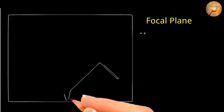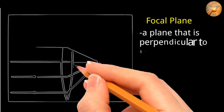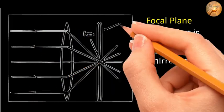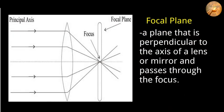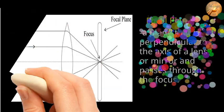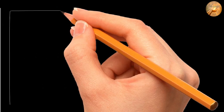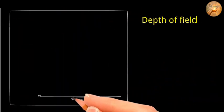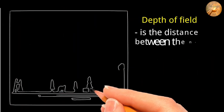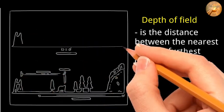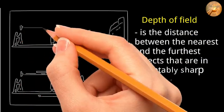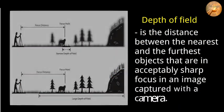The focal plane is a plane that is perpendicular to the axis of a lens or mirror and passes through the focus. The depth of field is the distance between the nearest and the furthest objects that are in acceptably sharp focus in an image captured with a camera.